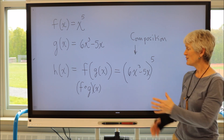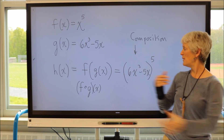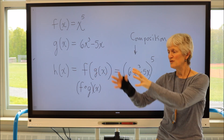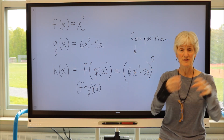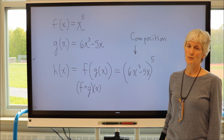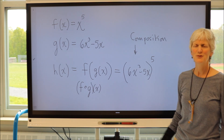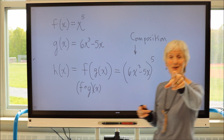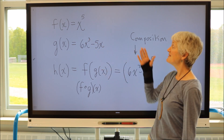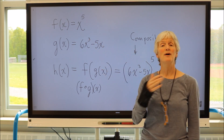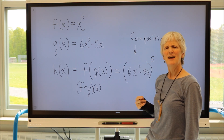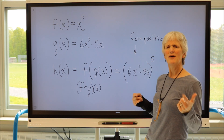For this, I could certainly expand that out, multiply this times itself five times, expand all that out, and then use the power rule to take the derivative of each term. But gosh, that would be a lot of work. There's got to be a shortcut, and there is. It's called the chain rule. I'm going to take the derivative of this function and a couple other examples and try to figure out what the chain rule is.